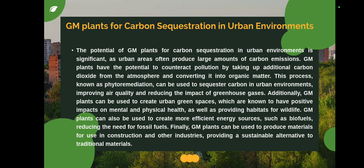Now we see how GM plants play a role in urban environments. The potential of genetically modified plants for carbon sequestration in urban environments is significant, as urban areas often produce large amounts of carbon emissions. GM plants have the potential to reduce pollution by taking up additional carbon dioxide from the atmosphere and converting it into organic matter. This process, known as phytoremediation, can be used to sequester carbon in urban environments, improving air quality and reducing the impact of greenhouse gases. Additionally, GM plants can be used to create urban green spaces and more efficient energy sources such as biofuels, reducing the need for fossil fuels.